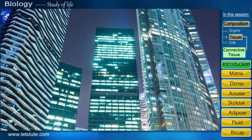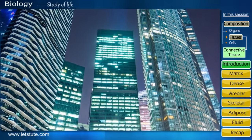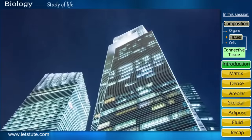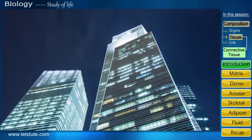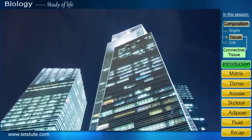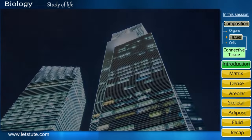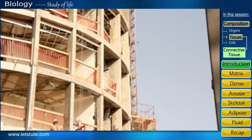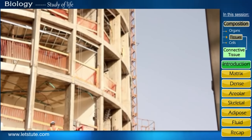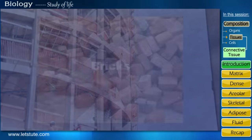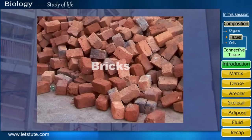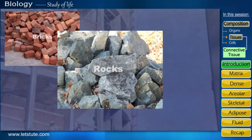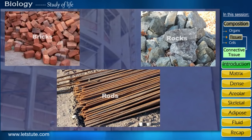We've all seen what a building looks like. It has walls, windows, balconies and terrace. And we also know what it's made up of — bricks, rocks, iron rods, etc.